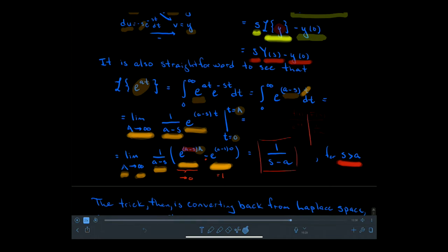This gives us a table entry: on the little-f-of-t side we have e to the at, and on the capital-F-of-s side we have 1 over (s minus a). This is our Rosetta stone — whenever we see either form, we can go back and forth between the two domains.